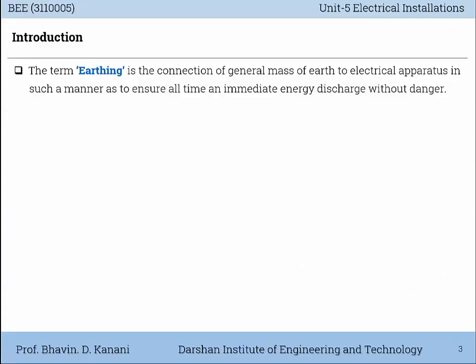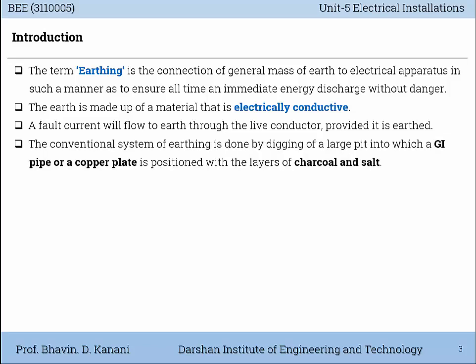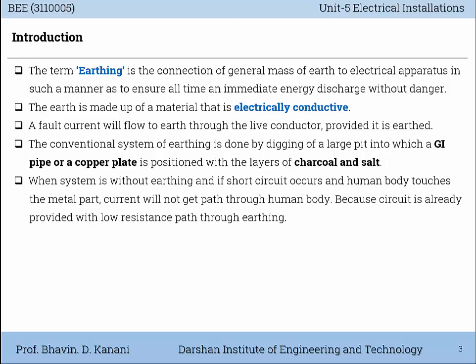The term Earthing is the connection of the general mass of Earth to electrical apparatus in such a manner as to ensure all-time and immediate energy discharge without danger. The Earth is made up of a material that is electrically conductive. A fault current will flow to the Earth through the live conductor, provided it is earthed. When a system is without Earthing and a dead short circuit occurs and a human body touches the metal part, the current will not get a path through the human body because a circuit is already provided with a low resistance path through the Earthing.